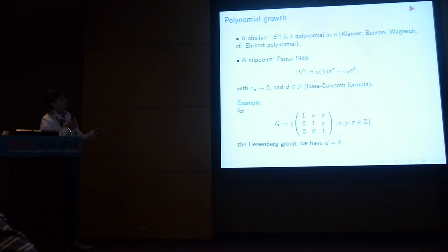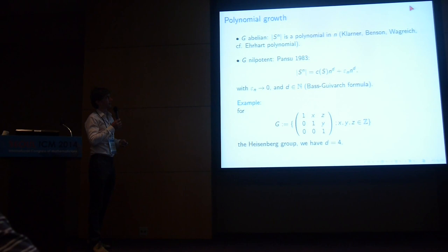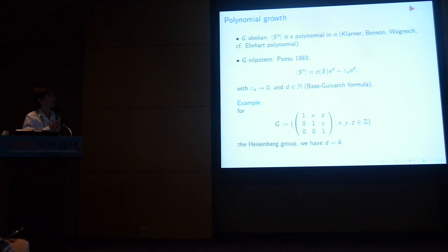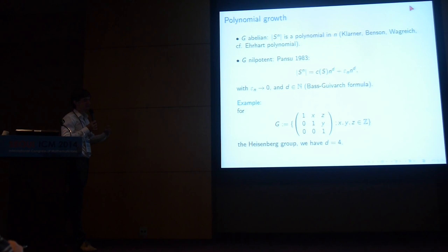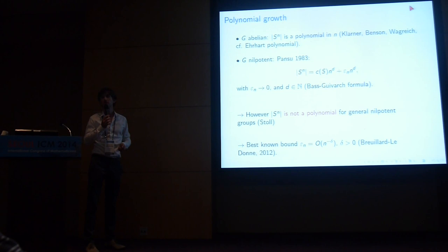Pansu's result is essentially geometric. The idea is to look at your group from very far away — you take a limit. This limit is the group itself, and the set S^n has a limit which is in fact a unit ball for a certain left-invariant sub-Riemannian metric. The constant in the polynomial growth formula is the volume of that limiting shape.